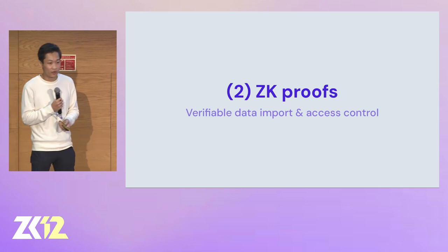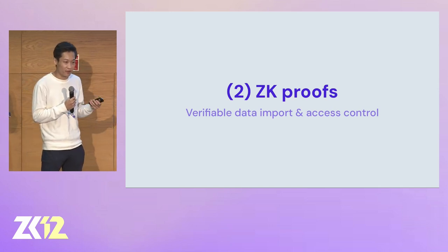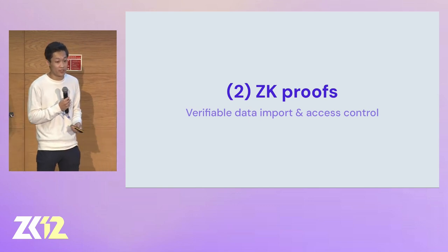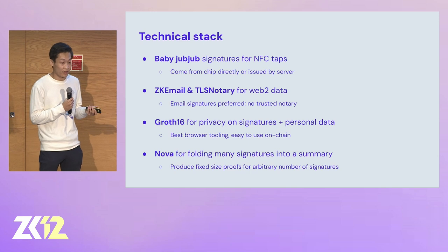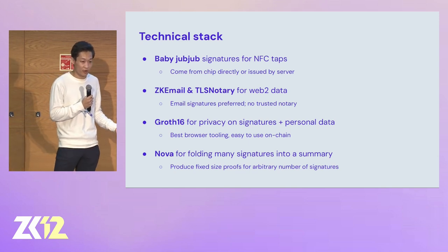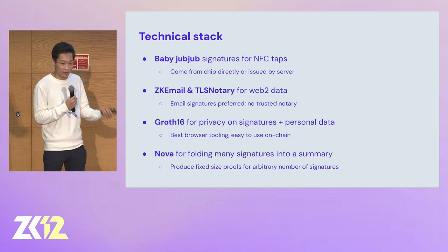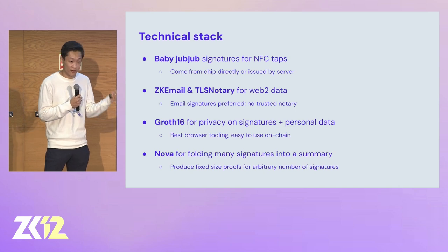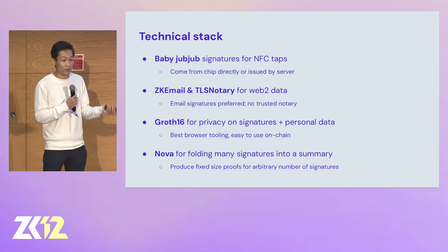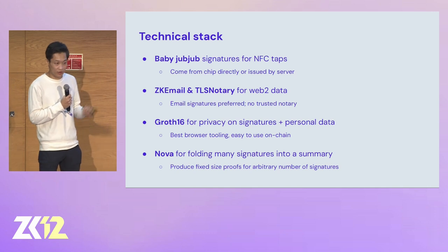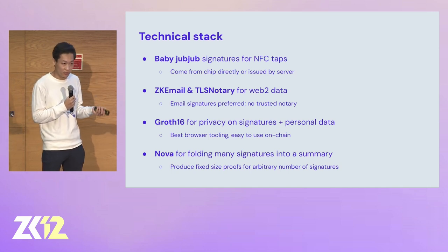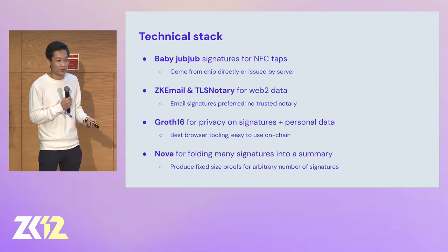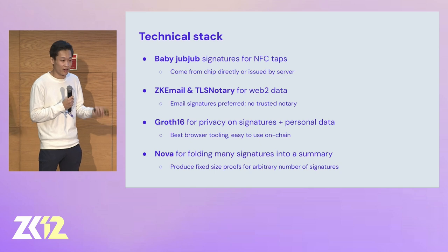We use ZK for verifiable data and being able to prove things about your social graphs and your own personal private data. Our tech stack is roughly this: we use baby jubjub signatures for NFC taps — they're ZK-friendly signatures. We use ZK email and TLS notary to export Web2 data and use it within our applications in a verifiable manner. Groth16 proofs for efficient client-side proving. And we use Nova and other folding schemes for folding multiple signatures together to generate summary proofs of an entire event experience.